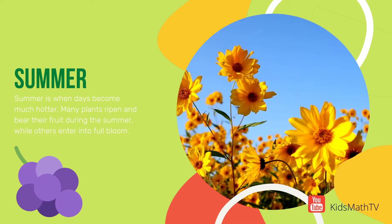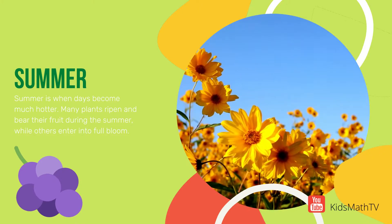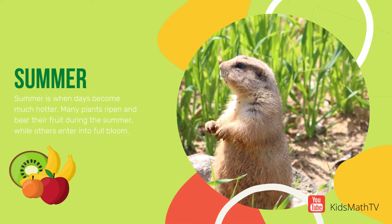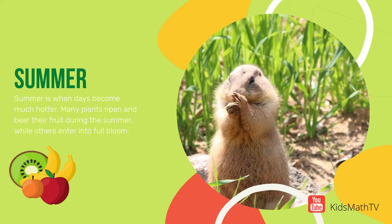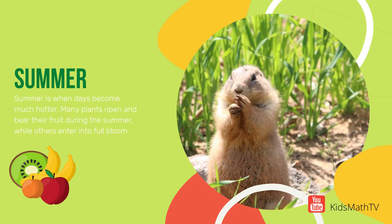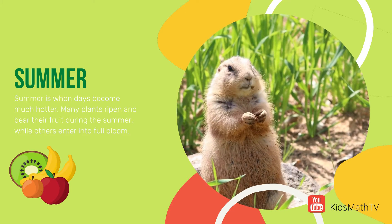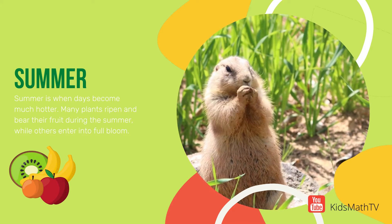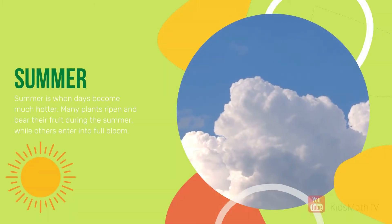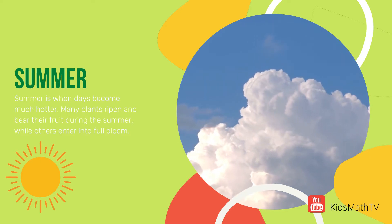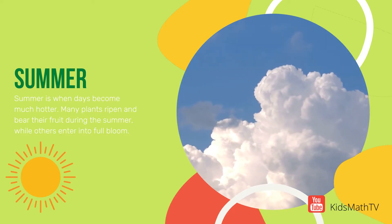Summer is when the days become much hotter. Many plants ripen and bear their fruit during the summer, while others enter into full bloom. Life flourishes during this period of warmth as herbivores feast upon fresh fruits and vegetables, and carnivores scurry out to hunt their prey. Animals will need to stockpile a lot of energy through eating to prepare for the colder months ahead. The summer sky can seem quite bright even in the evening due to the earth's tilt. In fact, this season also contains the longest day of the year, the summer solstice.